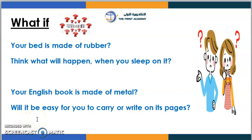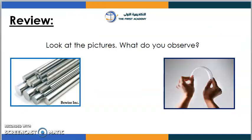I think we need to choose the right materials. For example, my book is made out of paper, so I can carry it and write on it. If my book were made out of metal, it would be hard to write on or carry. Look at the pictures and tell me what you observe. I see metal — metal is hard and strong — while the ruler is flexible.